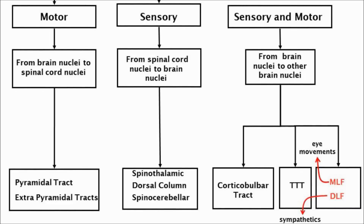The sensory tracks in the next column along are ascending tracks and these carry sensory signals from special receptors in the trunk and limbs towards the brain, specifically the cerebral cortex.